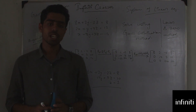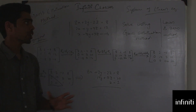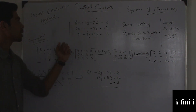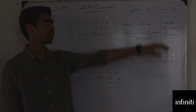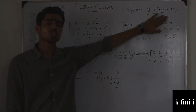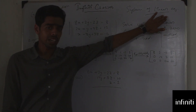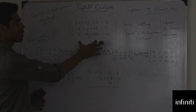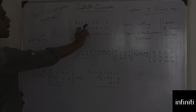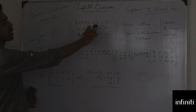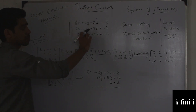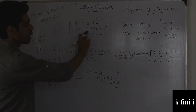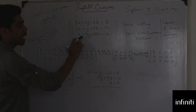Hello everyone, this is Prashant and today we are going to learn a new topic in numerical methods which is Gauss's elimination method, which is used to solve systems of linear equations. The equations given are: 8x + 2y - 2z = 8, 2x + y + 9z = 12, and 8x - 8y + 3z = -4.